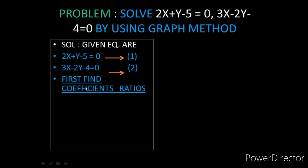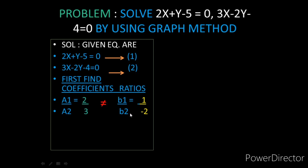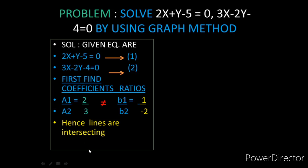We find a1/a2, the ratio of x-coefficients, which is 2/3. Then b1/b2, the ratio of y-coefficients: y-coefficient in equation 1 is +1 and in equation 2 is -2, so b1/b2 = 1/(-2). Since 2/3 is not equal to 1/(-2), the system is consistent with a unique solution — meaning the lines will intersect at a point.